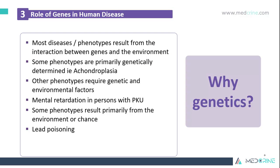One of the commonest questions in genetics is: what are the roles of genes in human disease? Most diseases, or phenotypes, result from interaction between genes and the environment. Some diseases are primarily genetically determined, for example achondroplasia. Other phenotypes require both genetic and environmental factors to lead to disease. Mental retardation in persons with phenylketonuria is also genetically influenced, and some phenotypes result primarily from the environment or by chance.